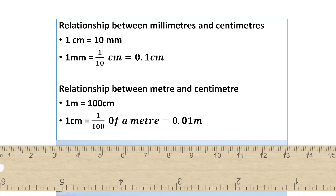We also studied the relationship between millimetres and centimetres. We saw that 1 centimetre is equal to 10 millimetres and 1 millimetre is equal to 1 tenth of a centimetre, which is also equal to 0.1 centimetre.